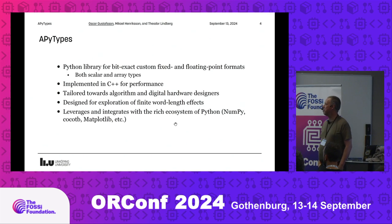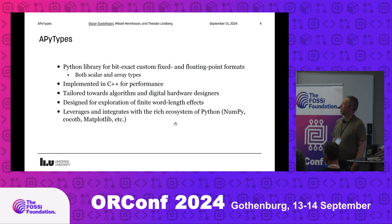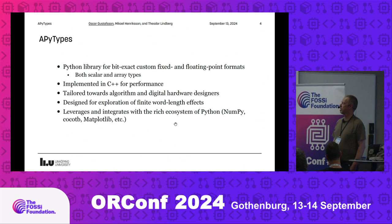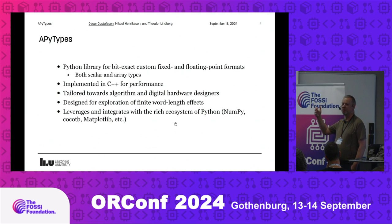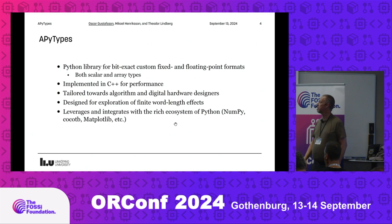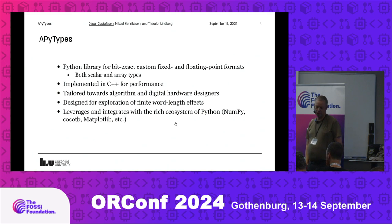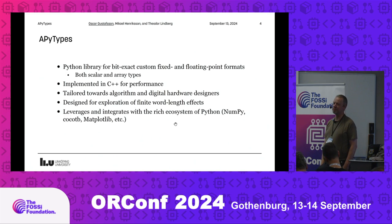Therefore, we developed APY types, which is essentially a NumPy library where you can specify exactly what data type you want. You have both scalar and array types for both fixed and floating-point formats with fully configurable word lengths. Floating-point numbers can only have up to 32-bit exponent and 64-bit mantissa. Fixed-point numbers can be any size. It's implemented in C++ for decent performance, and the idea is that it should be what an algorithm or hardware designer would expect.